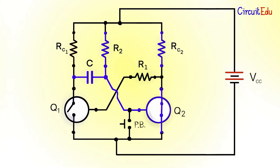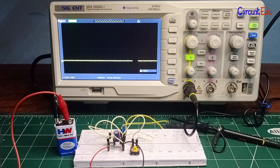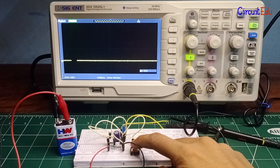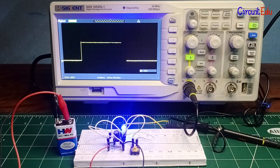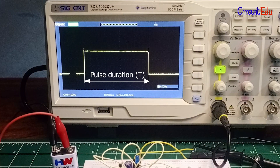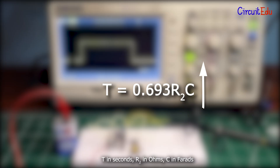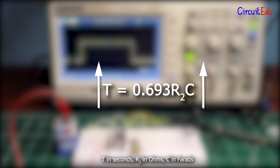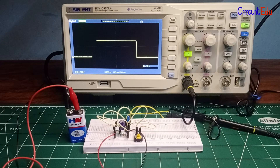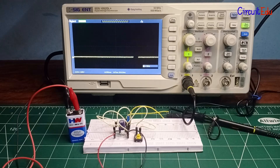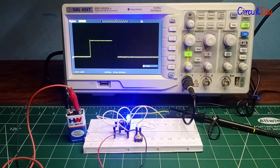That's how a monostable multivibrator circuit works. The output waveform on the oscilloscope shows the voltage pulse. The pulse duration can be found using the equation T ≈ 0.693 × R2 × C. A higher value of resistor R2 or capacitor C results in a longer pulse duration. You can try different values of R2 and C to make longer or shorter pulse durations.